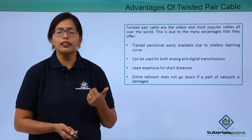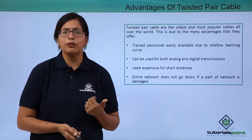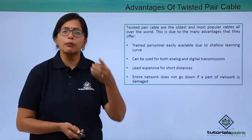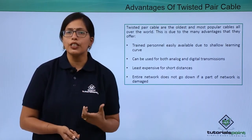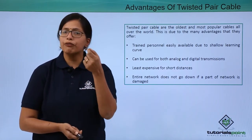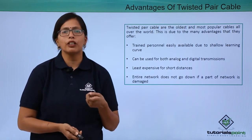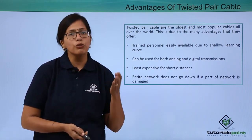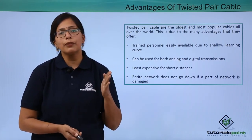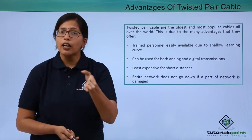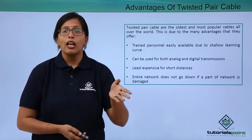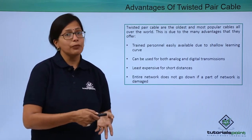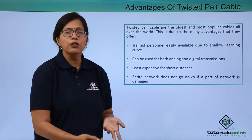Why? Because, as we learnt in the previous video, up to 25 pairs of cables are put in a single sheath. So if one copper wire is not working properly, there is no issue — that same data can be transferred using the other wires. But still, the copper wires have some disadvantages also.